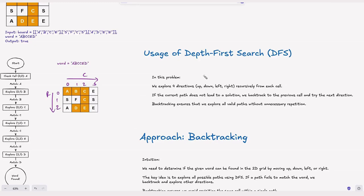If you're not aware of DFS: DFS is a recursive technique used to explore all possible paths in a problem by going as deep as possible along one path before backtracking to explore others. In this problem, we'll explore four directions — up, down, left, and right — recursively from each cell. If the current path doesn't lead to a solution, we backtrack to the previous cell and try the next direction.